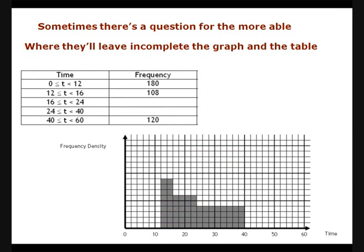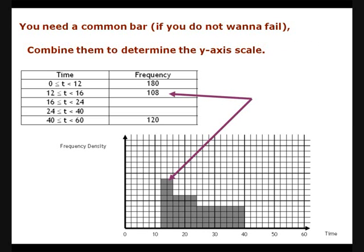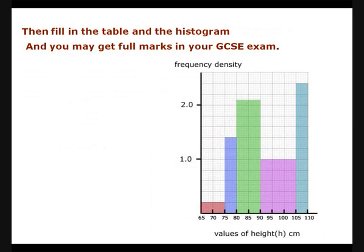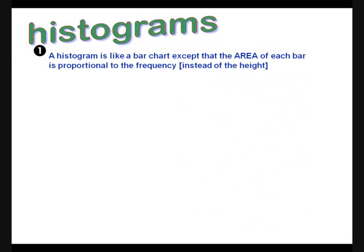Sometimes there's a question for the more able with the table incomplete, the graph and the table. You need a common bar if you do not want to fail, combine them to determine the y-axis scale. Then fill in your table and your histogram and you may get full marks in your GCSE exam.